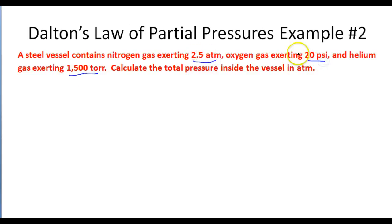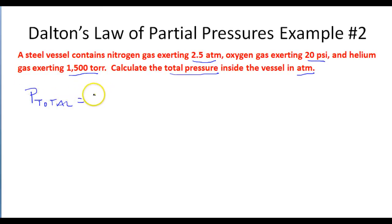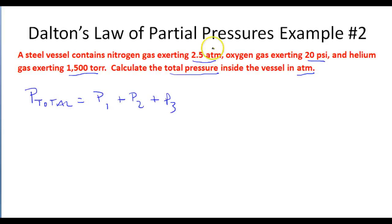The issue is that each unit is different — atmospheres, psi, and torr — and the question asks for the answer in atmospheres. Before adding, we need to convert all pressures to atmospheres. The first gas is already in atmospheres at 2.5 atm. For the second gas, 20 psi divided by 14.69 gives us 1.362 atm.